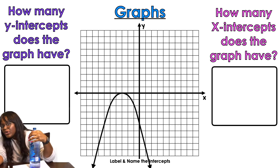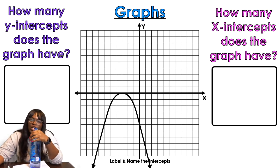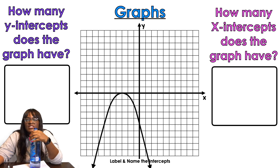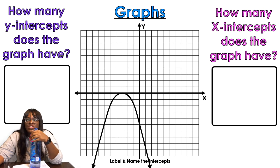All right, so we have this wonderful upside down parabola that we got going on here. How many x-intercepts does the graph have? Well, it touches it as a singular point right there. So guess what, just one. And now we're gonna do the y-axis. Just one. Yay!